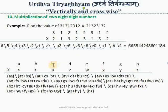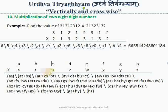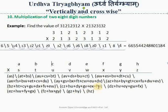Then we take six columns from C to H, where cross multiplication is taking place: C into Z plus H into U plus D into Y plus G into V plus E into X plus F into W, and we shall write the result here.